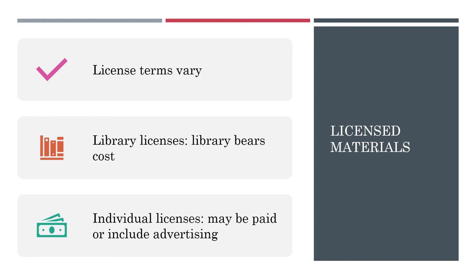Look for any limits on the number of simultaneous users for ebooks and streaming services, since that could cause problems for time-sensitive access. If you use services like YouTube or Spotify to include multimedia materials in your class, you're also using licensed content, but the cost is borne by student account payments, advertising, or data collection.